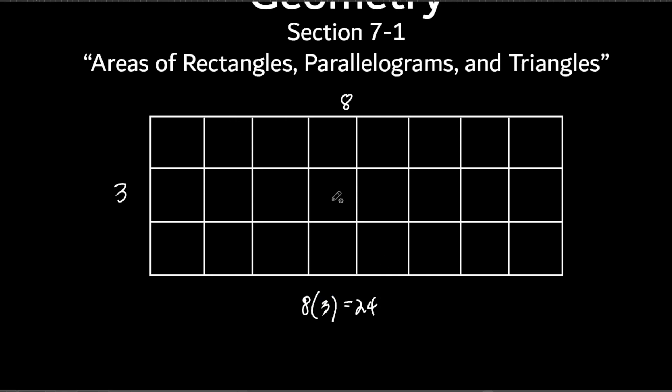I have 24 what, though? 24 what inside of this rectangle? I got 24 squares. So this is how we do it. So instead of writing squares, you could write it like this. You could write SQ for squares. And if it was like in, let's say it was in inches, so if this was eight inches, three inches, you could say square what? Inches.